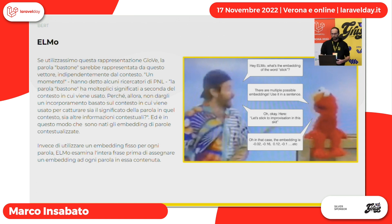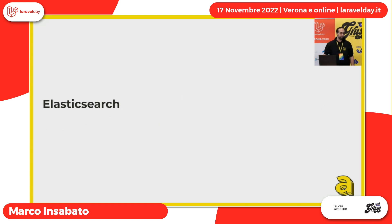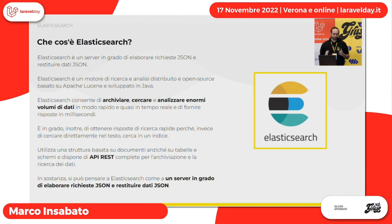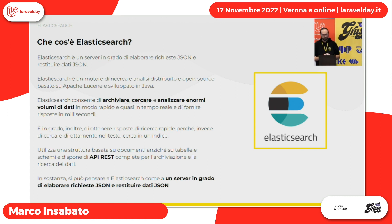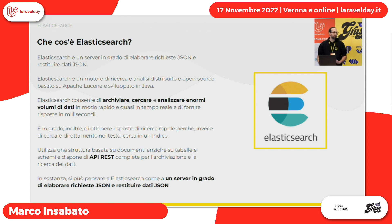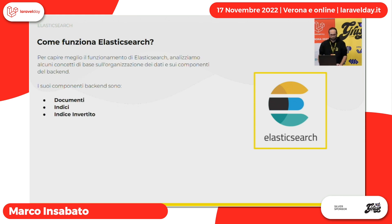Passiamo al secondo elemento fondamentale del nostro progetto: Elasticsearch. Per chi non lo conoscesse, Elasticsearch è un server in grado di elaborare richieste JSON e restituire dati JSON. È un sistema open source basato su Lucene di Apache, sviluppato in Java. È un sistema che consente di archiviare, cercare e fare analisi di enormi volumi di dati. Mi piace definirlo chiave in mano: una volta creato il container con Docker, abbiamo a disposizione una serie di API REST per fare tutto quello che ci serve, con zero configurazione.